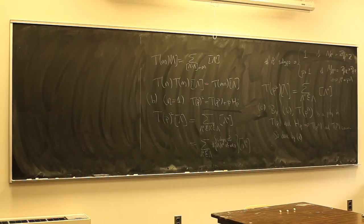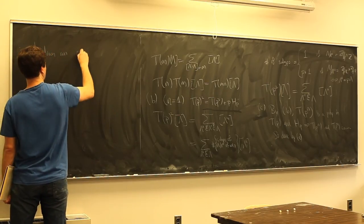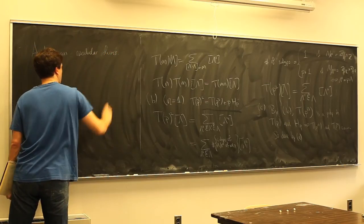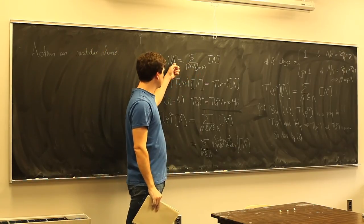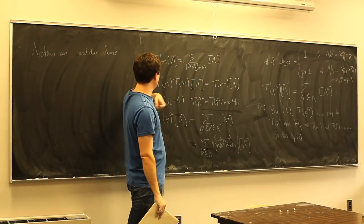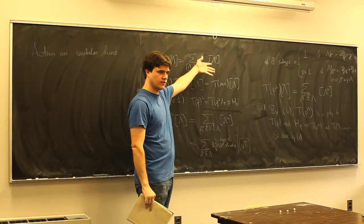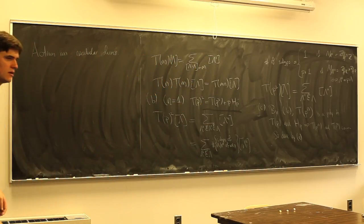Now I'm going to define an action of these Hecke operators on modular forms. A modular form is a function on lattices, and when we do T(n) times a modular form, that function should be the sum of values of the modular form on the index-n sublattices. It's convenient to add a normalization factor to make things look nicer. So if f is a modular form of weight k, then (T(n)f)(Λ) = n^{k-1} · Σ_{[Λ:Λ']=n} f(Λ').